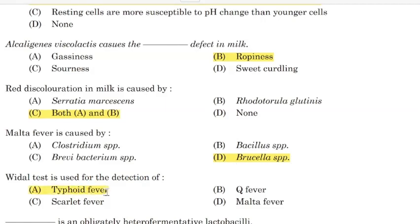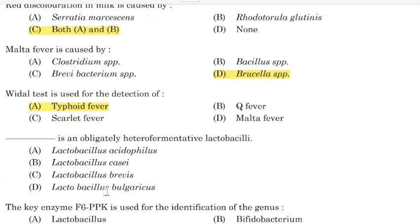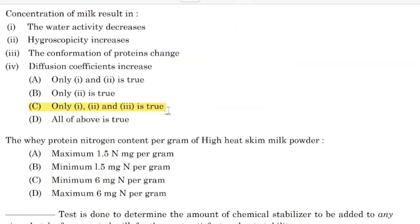Violet test is used for the detection of — Correct answer: Option A — Typhoid fever. Blank is an obligately heterofermentative lactobacillus — Correct answer: Option C — Lactobacillus brevis.